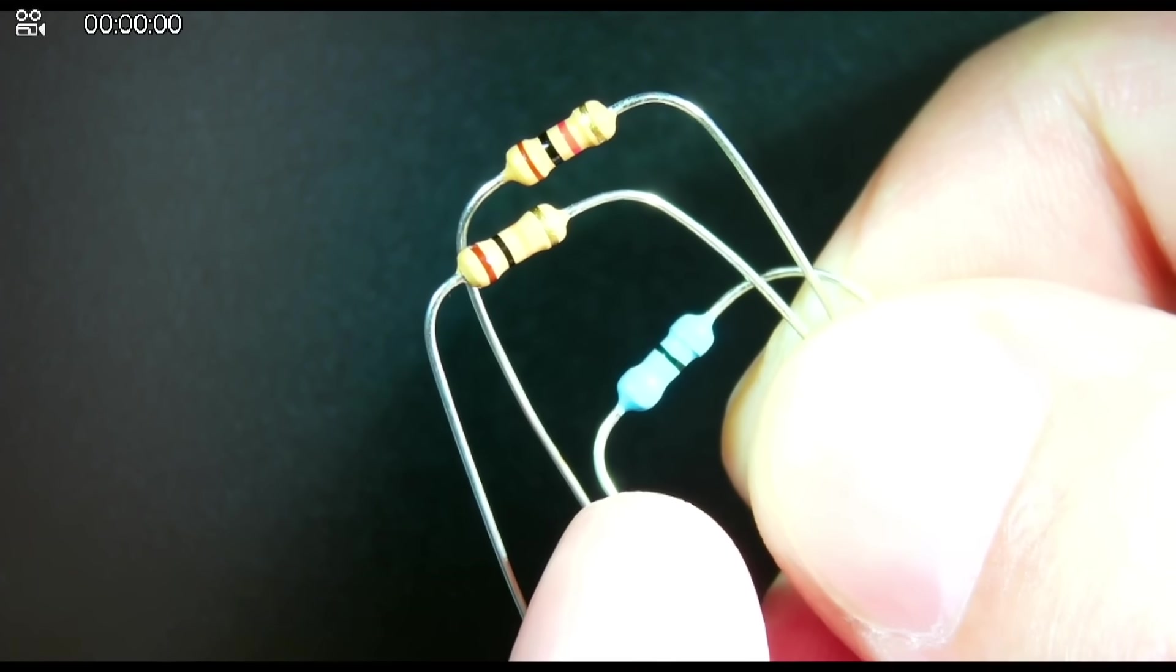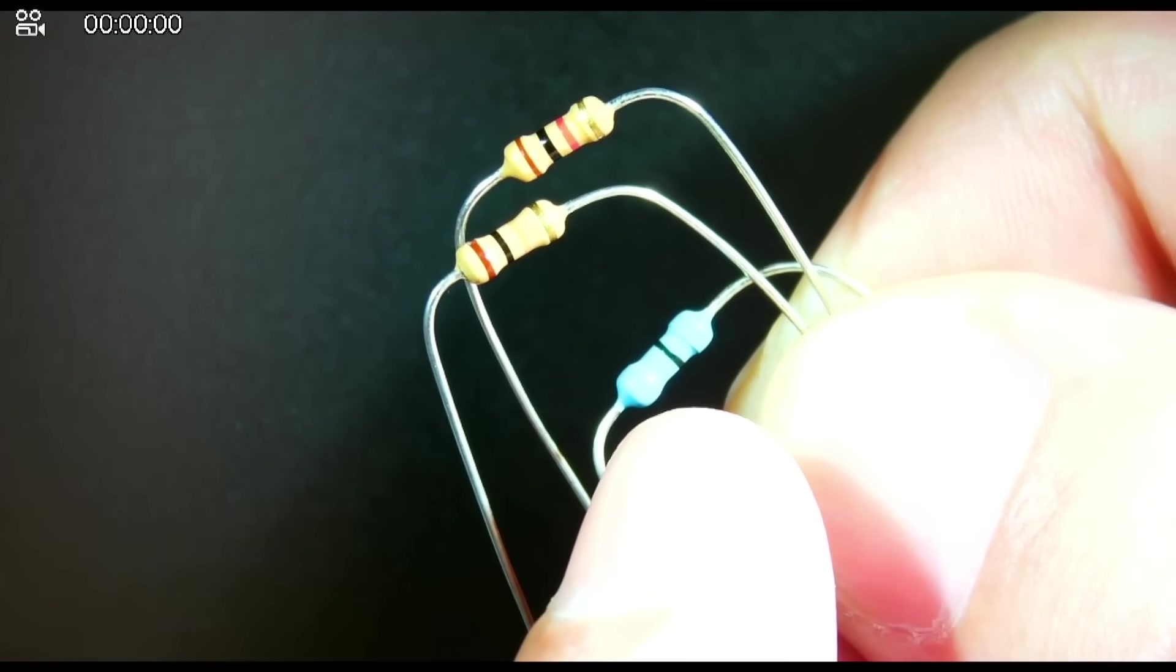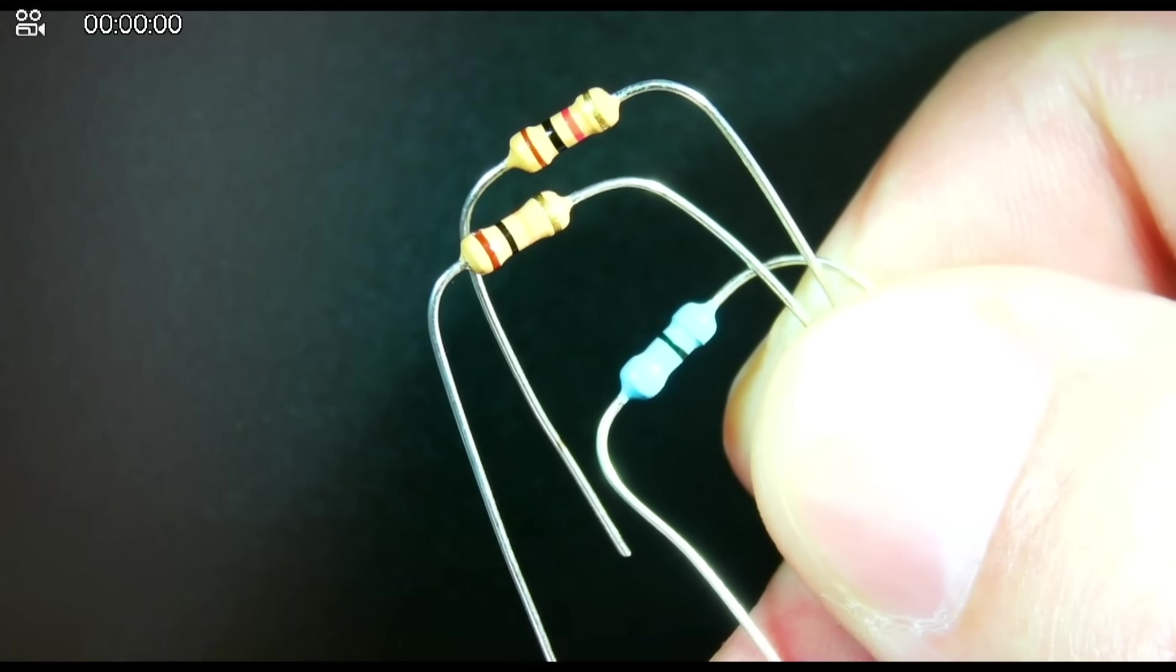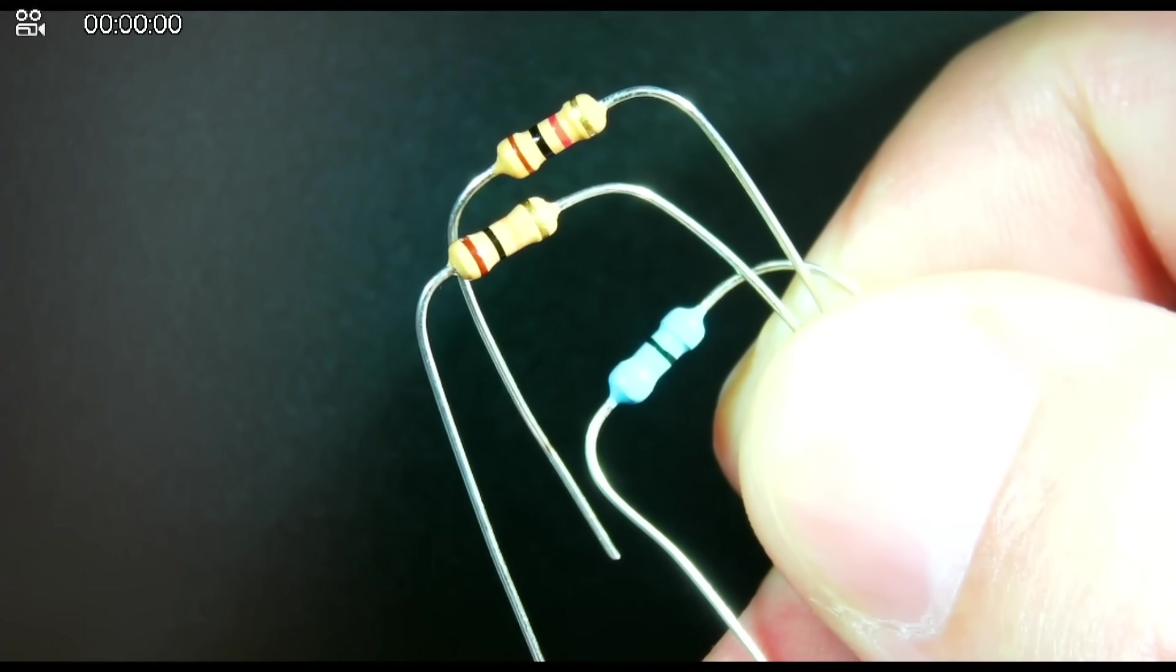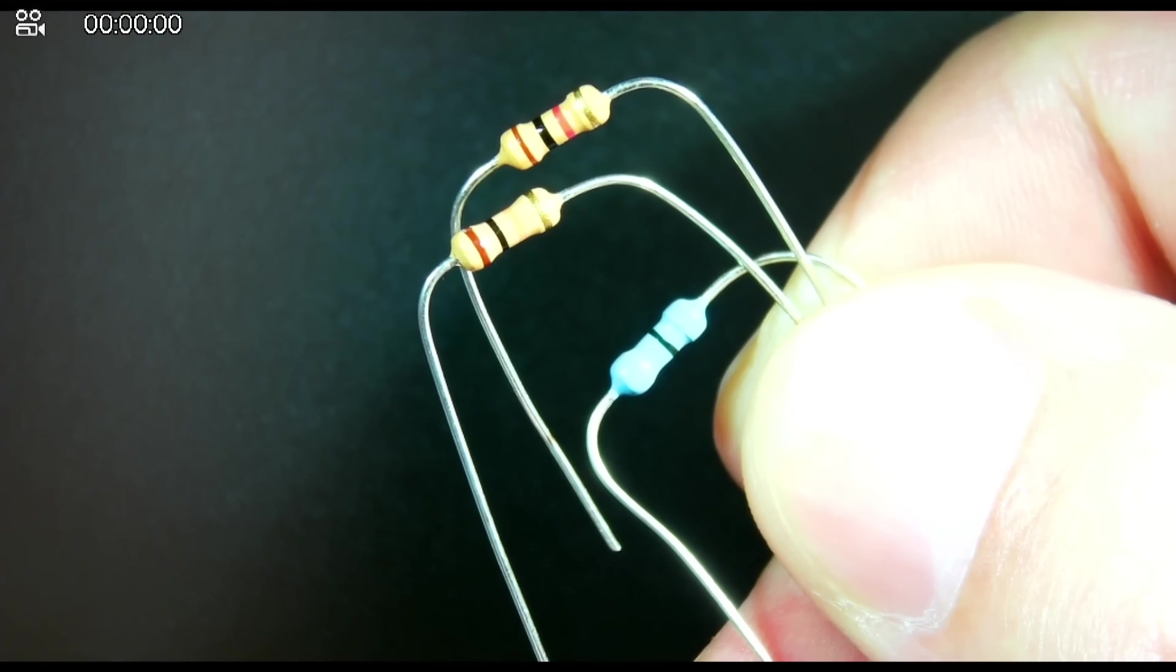But then there's this one that's a little bit more unique. Of course it has a blue body, but what's more unique is the fact that it has that single black band. And that single black band means that it has no resistance. It does not resist at all. It is a resistor that doesn't resist.